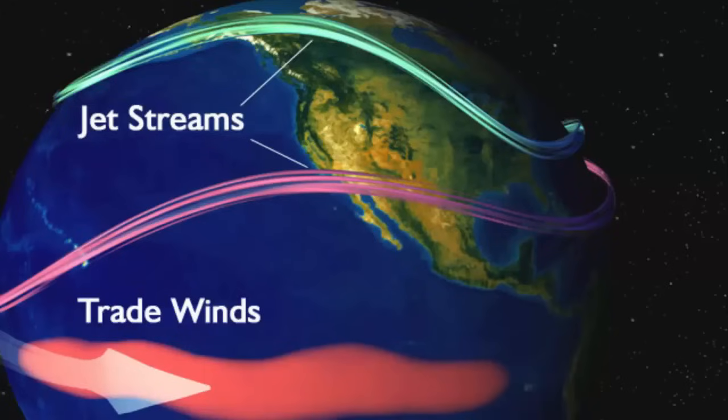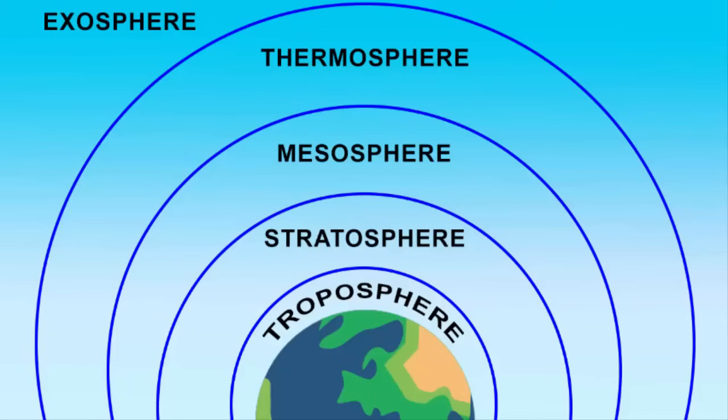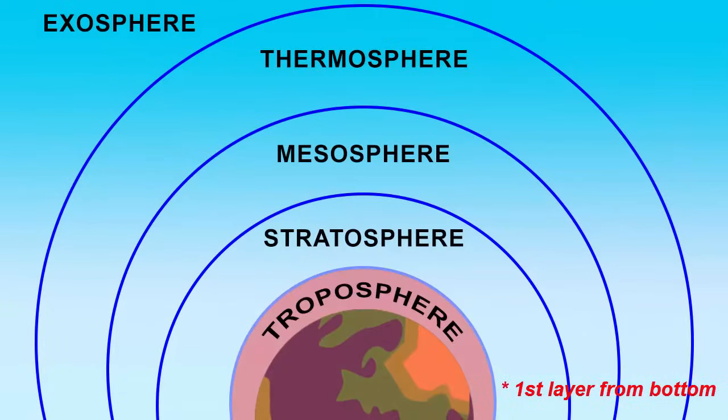Jet streams are typically active at 6 to 11 kilometers above the surface of the earth and it is mostly found in the troposphere which is the first layer of atmosphere.